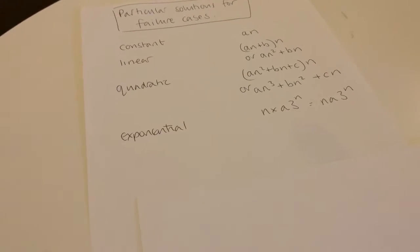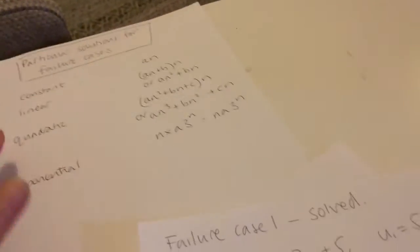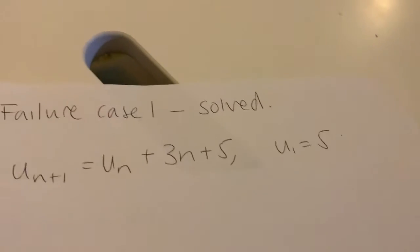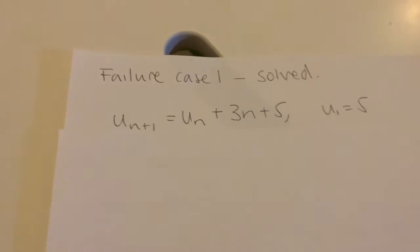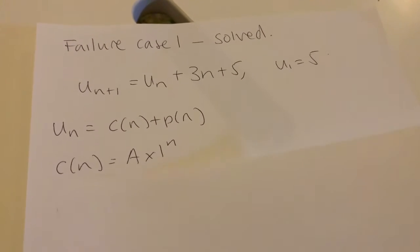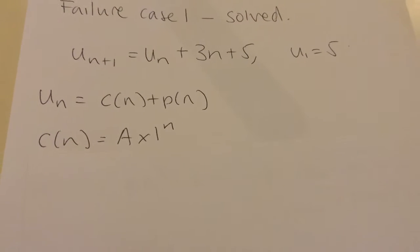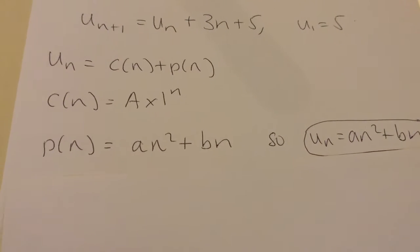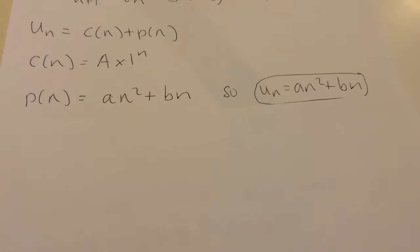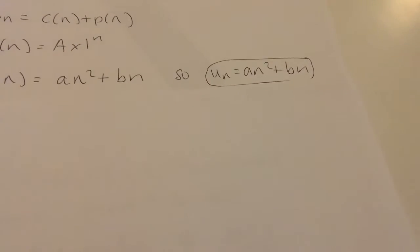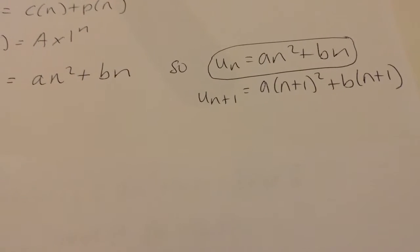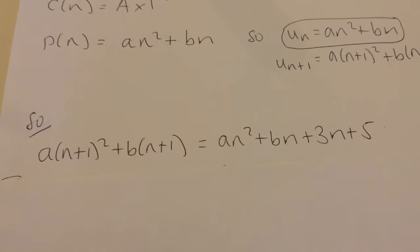Here is the solution to our first failure case. The complementary function follows the same rules. I have my general solution as complementary function plus particular solution. My particular solution, instead of an plus b, is multiplied by n, giving an² plus bn. So u_{n+1} replaces the n's with n+1. I then put that into the recurrence relation.